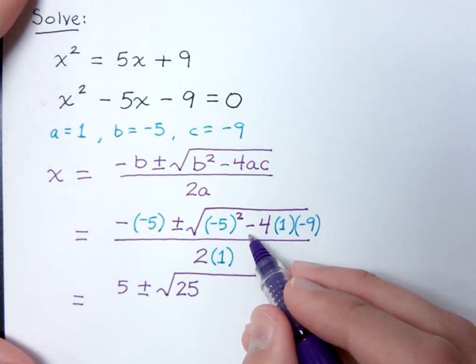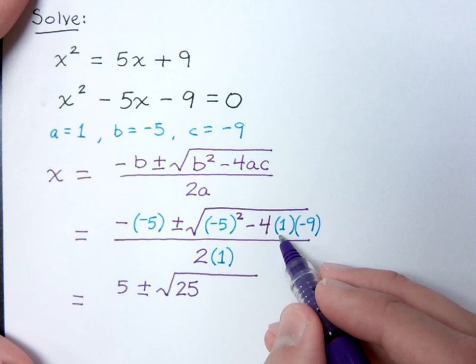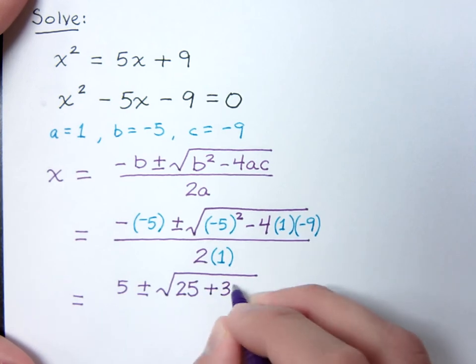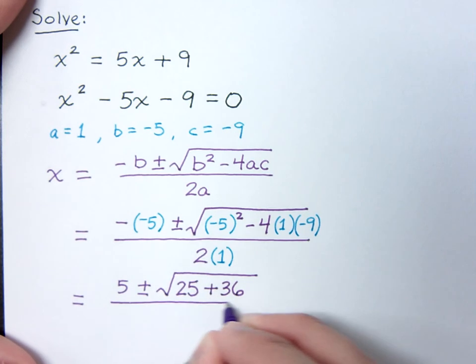This is the kind of tricky part here. Negative 4 times 1 is negative 4. Times negative 9 is a positive 36. And this is all over 2 times 1, which equals 2.